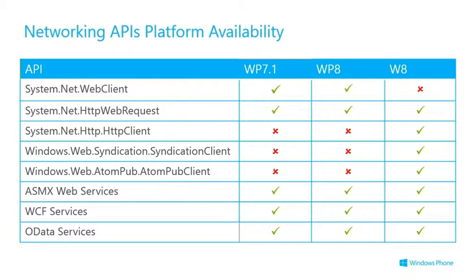WebClient was too complex for Windows 8 dev so it was removed, and instead they have a new one called HttpClient — written for the Windows 8 APIs, totally asynchronous and very efficient. Unfortunately we don't have that on Windows Phone 8. Windows 8 also has the SyndicationClient and AtomPubClient specifically for accessing those kinds of feeds — we don't have those either. But for ASMX web services and WCF and OData services, there's a good story across all platforms.